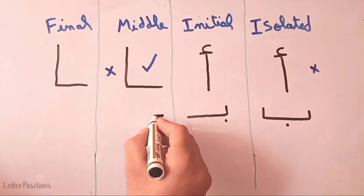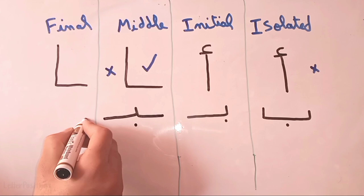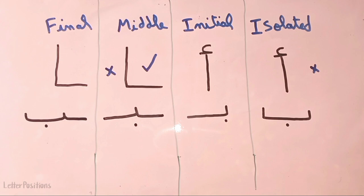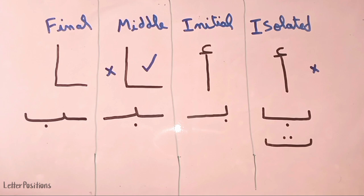In the middle form, it's a straight line — we go up, come back, go straight, and put a dot underneath the letter. In the final form, a straight line and the shape of the letter al-ba' with the dot underneath the letter.